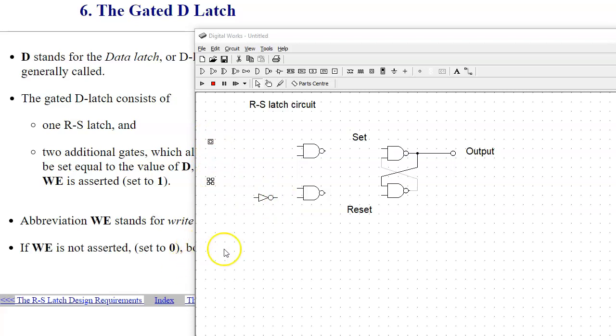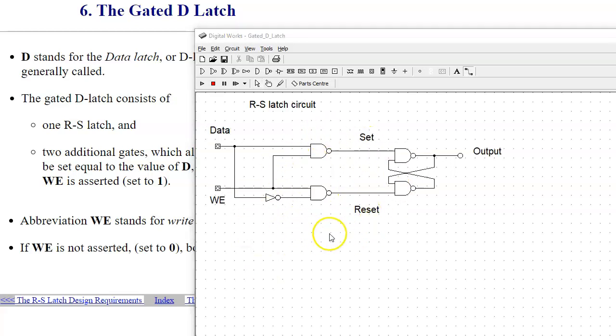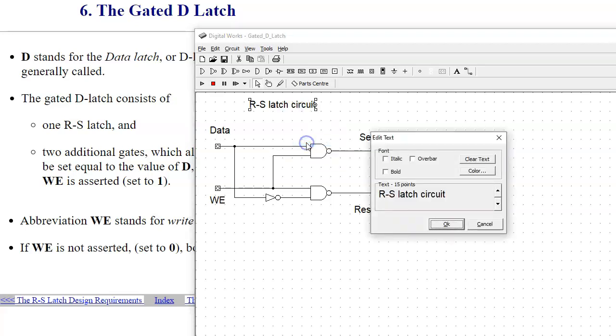Use the wiring tool to make necessary connections and then make necessary adjustments to keep the lines straight. So here's the new version of my circuit. Let us also update the title. Now it will be gated D latch.